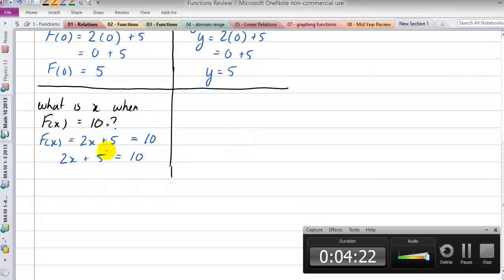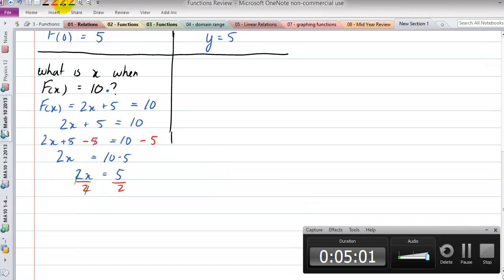And we can start to manipulate this. It's the idea of balancing equations—what you do to one side of the equation we do to the other. So we could say 2x plus 5, and then say subtract 5 on this side, equals 10 subtract 5 on that side. So that means 2x, these two cancel out, equals 10 minus 5 which is 5. And then we can divide both sides by 2, so x equals 5 over 2.